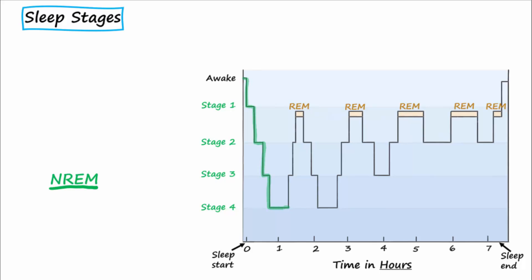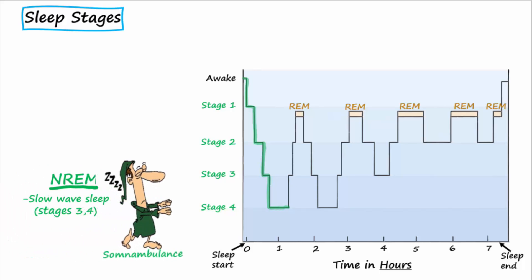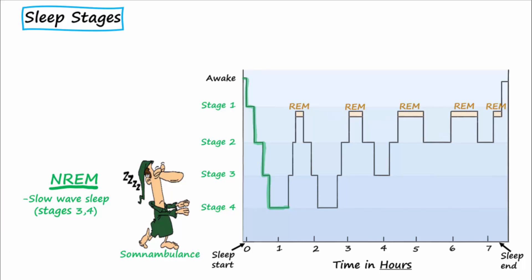Stages three and four of non-REM sleep are also known as slow-wave sleep because of the low frequency of brain waves shown on the electroencephalogram, or EEG, during these stages. The phenomenon known as sleepwalking, or somnambulance, occurs during the slow-wave stages of non-REM sleep. It is also thought that consolidation of declarative memories from short-term to long-term occurs during the slow-wave non-REM stages.